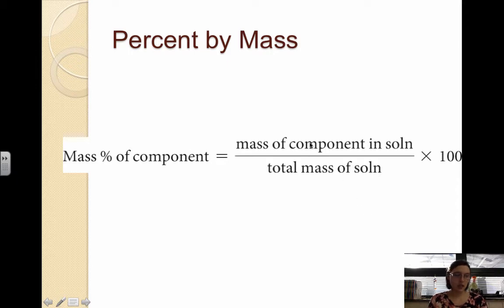We take the ratio of a component - typically it would ask for the solute. So we take the mass of the solute divided by the total mass, and because it's a percent, we multiply it by 100. Sometimes it could ask for the solvent. If that's the case, you take the mass of the solvent over the total mass of solution. In any case, you just take the mass of what you're trying to find divided by the total mass of the solution times 100.